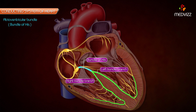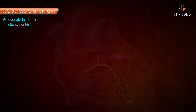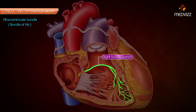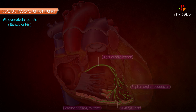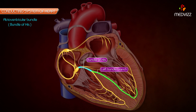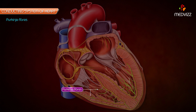The right branch of the bundle of His passes down on the right side of the interventricular septum, becoming subendocardial on the right side. A large part continues in the septomarginal trabeculum to reach the anterior papillary muscle and anterior wall of the ventricle, and its Purkinje fibers then spread out beneath the endocardium. The left branch descends on the left side of the ventricular septum and divides into Purkinje fibers distributed to the septum and left ventricle.